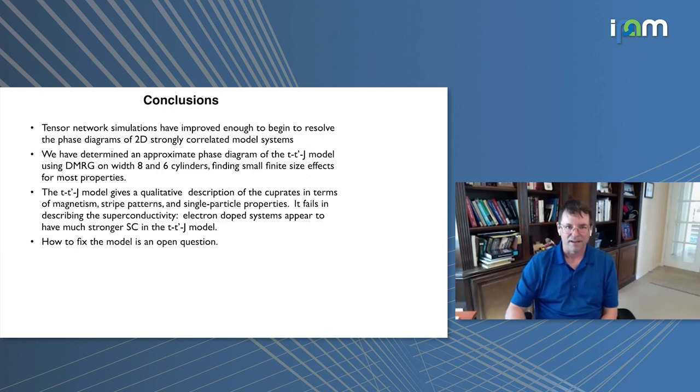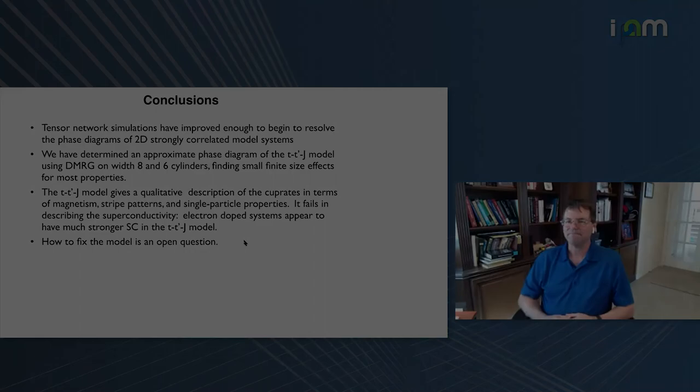To conclude, the tensor network simulations have improved enough to resolve the phase diagrams of a number of 2D strongly correlated model systems, and this is continuing. We have determined an approximate phase diagram of this T T prime J model, finding that the finite size effects seem to be rather small for the width of the system, so we think this applies to 2D. It gives a qualitative description of a number of features of the cuprates, but it fails in terms of the superconductivity and how to fix the model is still a very open question. Thank you.